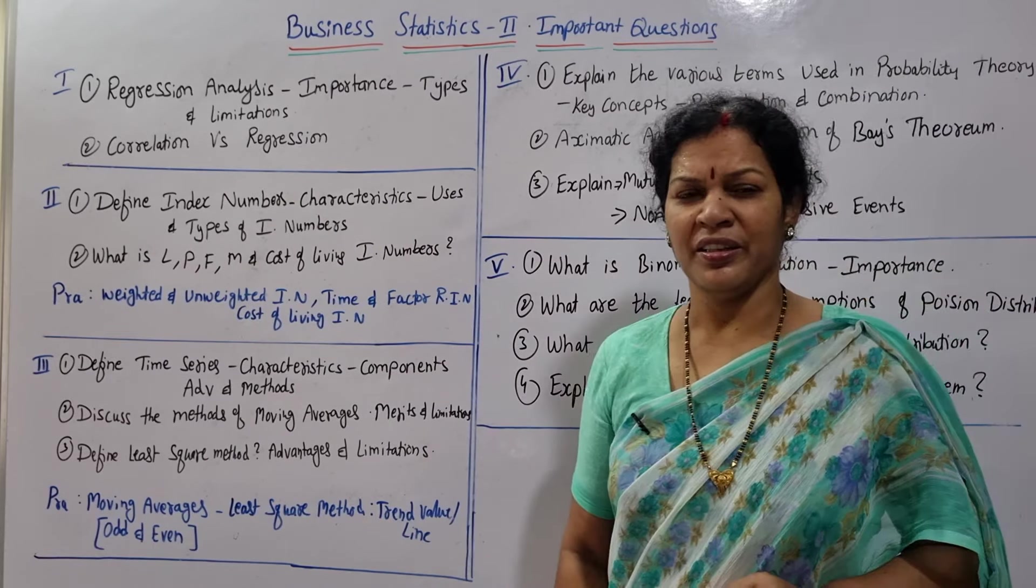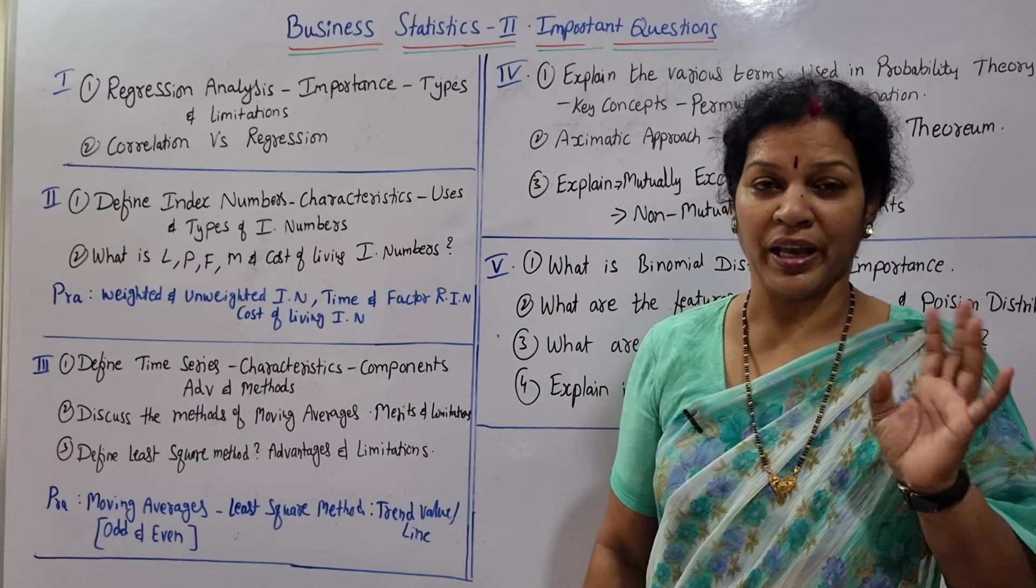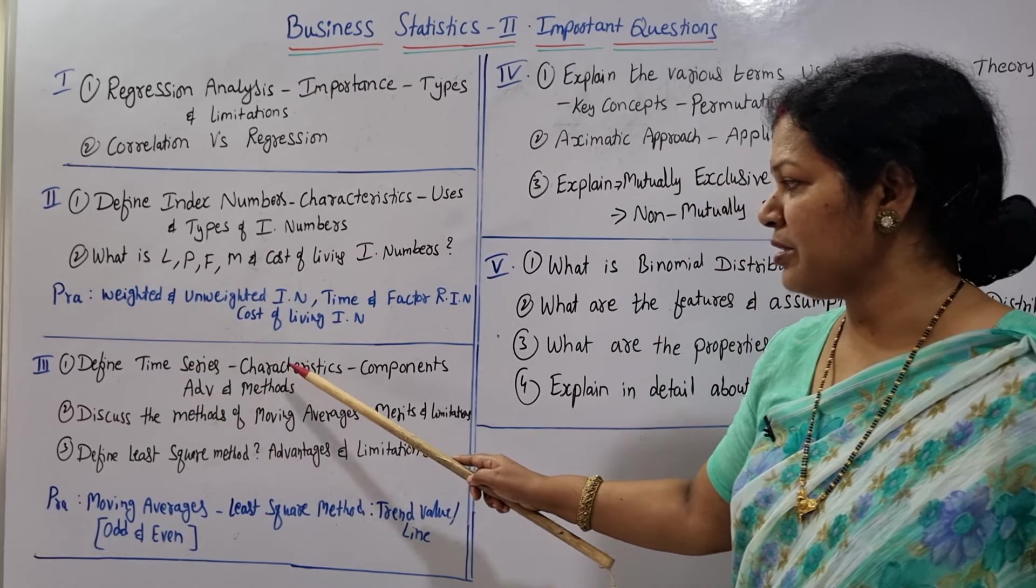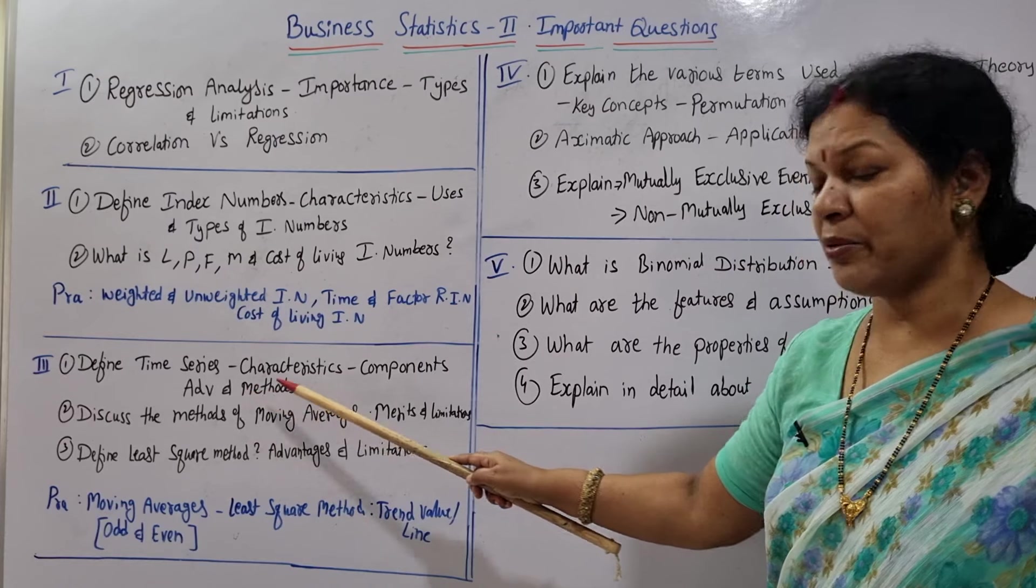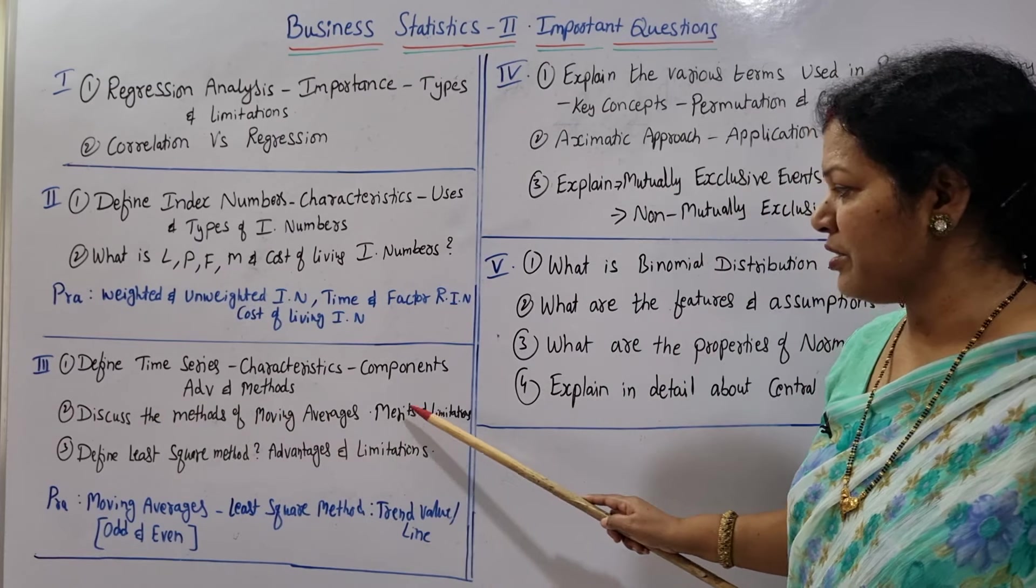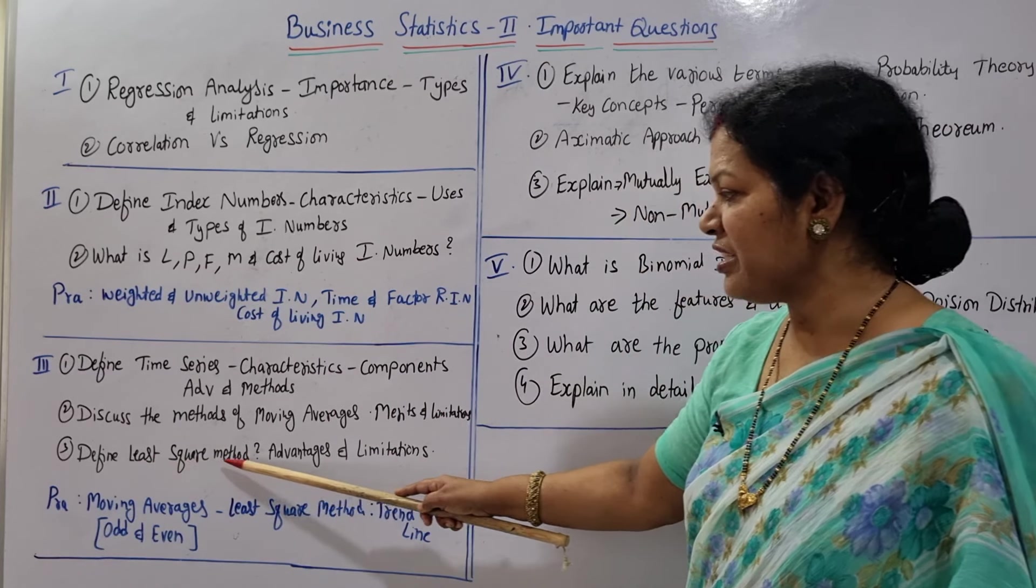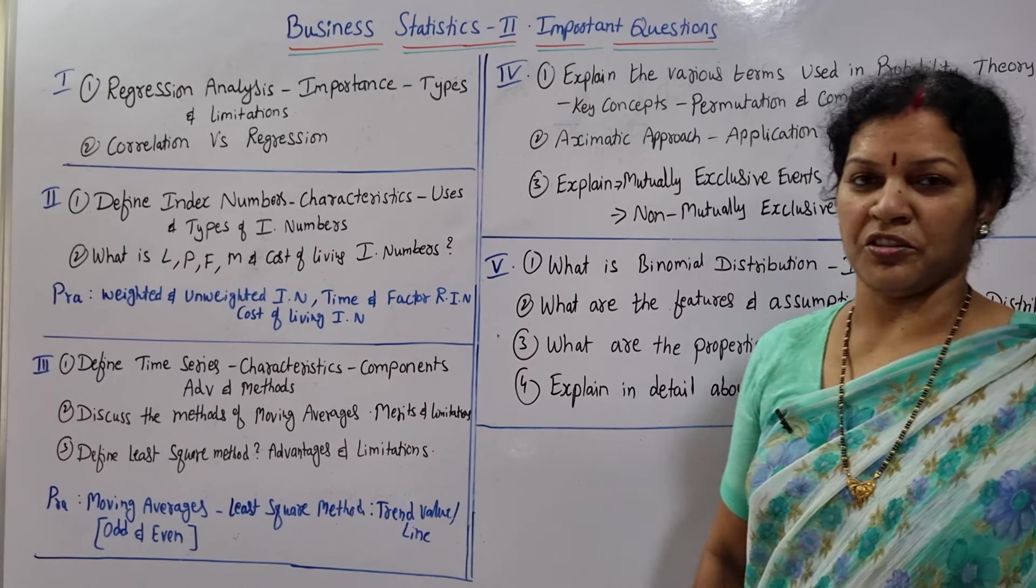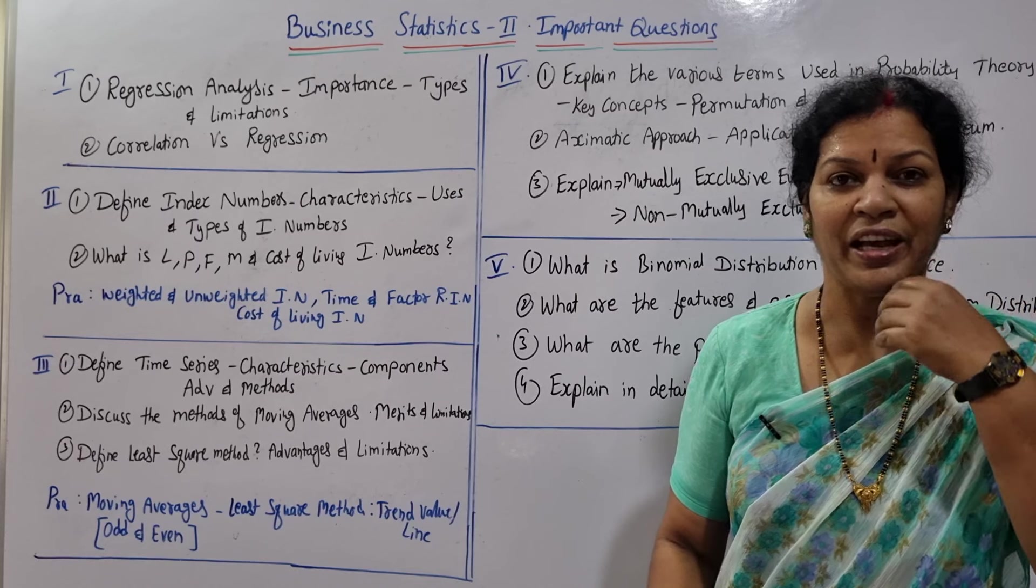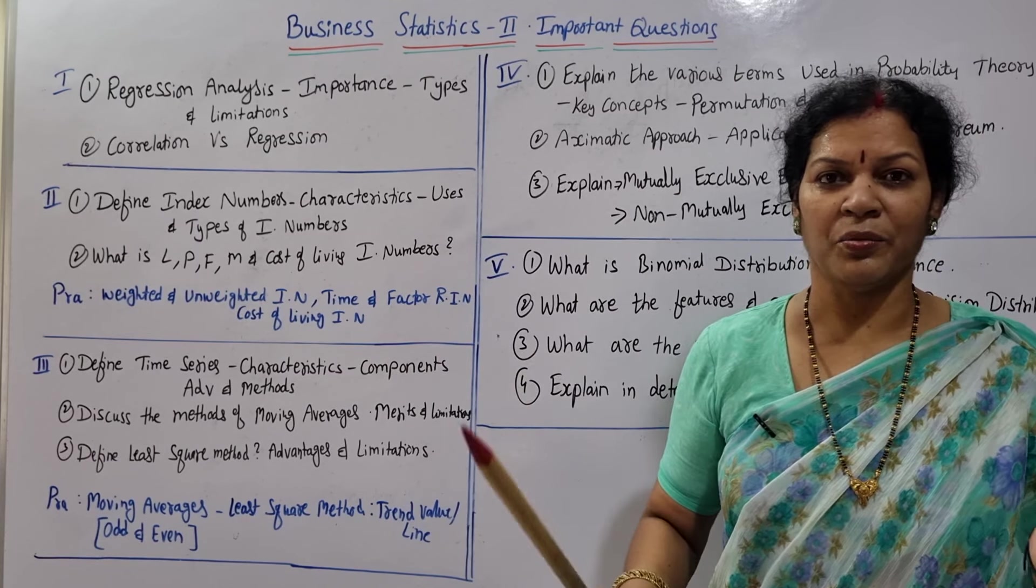Now coming to the third unit, we'll be discussing about Time Series and Moving Averages. Important theory questions are only three: define time series, characteristics, components, advantages and methods. Second one: discuss the methods of moving averages, its merits and limitations. Third one: define least square method, advantages and limitations. These three - we have some idea about practicals, when we have idea about practical, theory is also very easy, once you just read it like a novel you can understand.